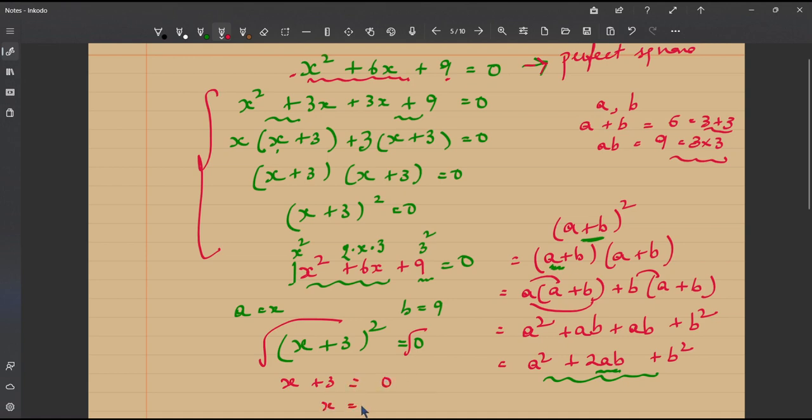x plus 3 is equal to 0 obviously. So, x is equal to minus 3, we get repeated roots here x is equal to minus 3. So, just see we have avoided all these calculations and working just by identifying that this equation is a perfect square.